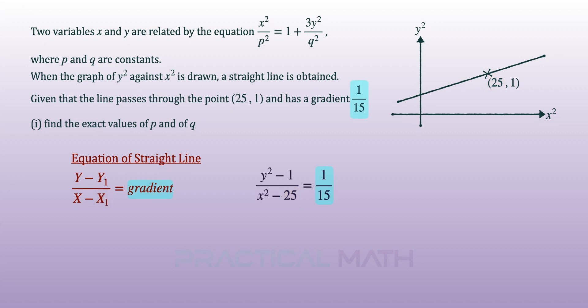With a gradient of 1 over 15, we will be able to form this equation. Doing a cross-multiplication, we will have x² minus 25 on the left and 15y² minus 15 on the right.